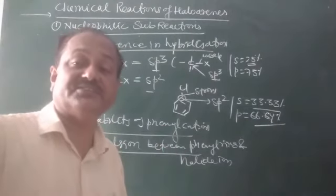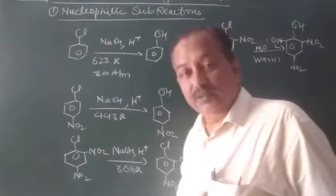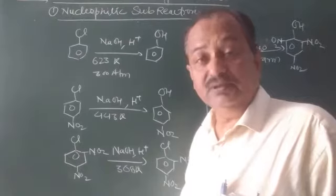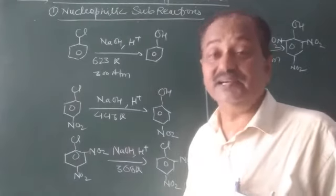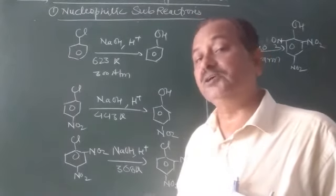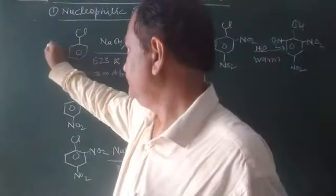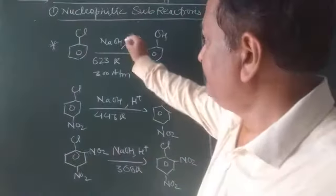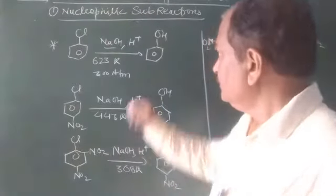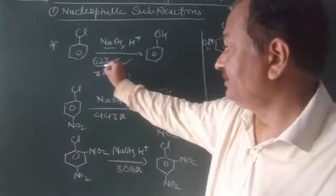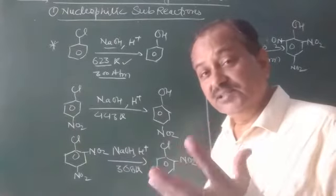As a result, nucleophilic substitution reactions of haloarenes take place only under drastic conditions — high temperature, high pressure, and presence of strong base. For example, chlorobenzene treated with strong NaOH at 603 K and 300 atmospheres pressure undergoes substitution to form sodium phenoxide, which upon acidic hydrolysis gives phenol.